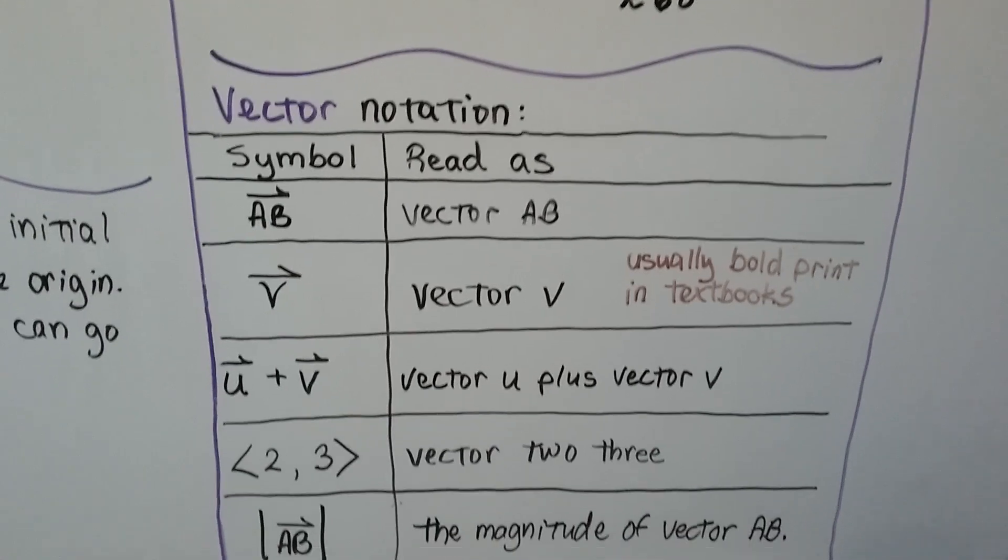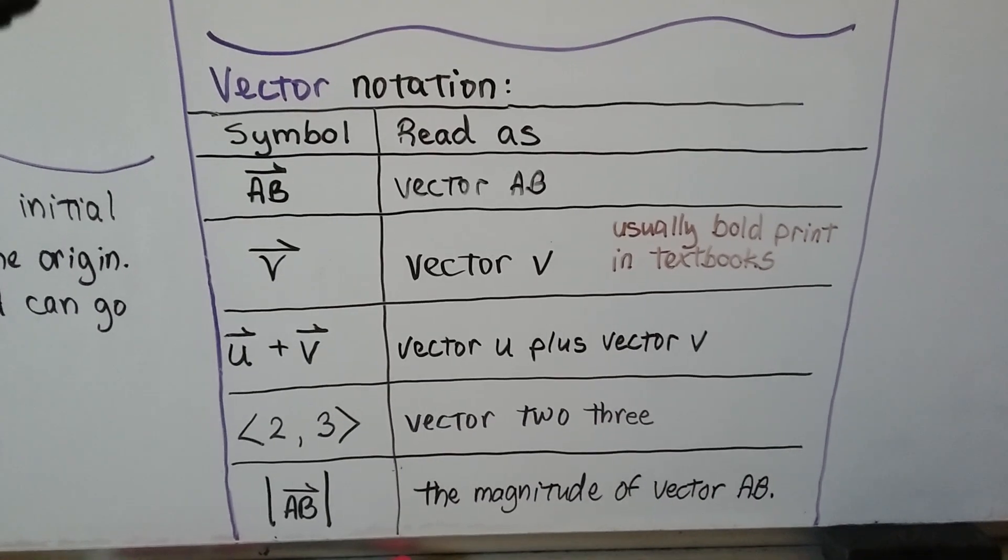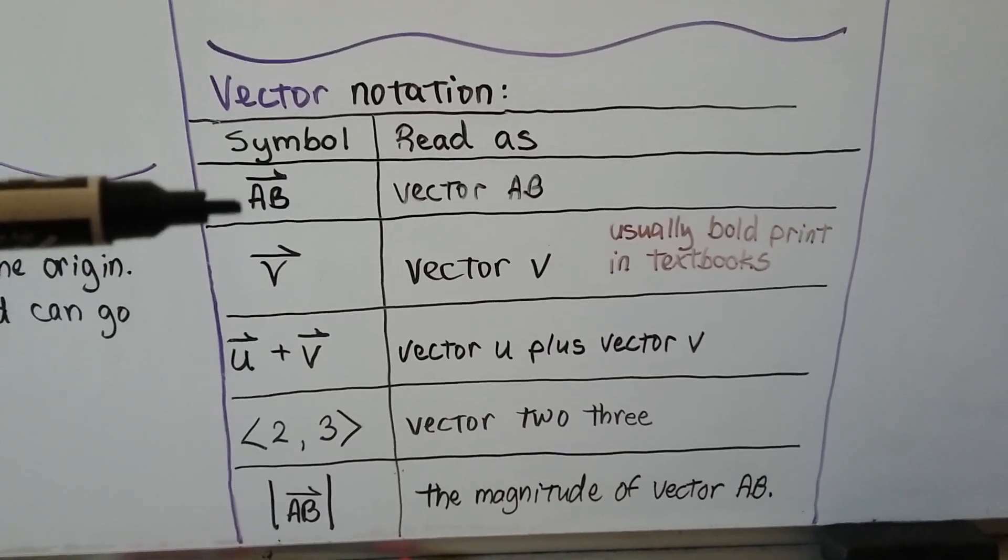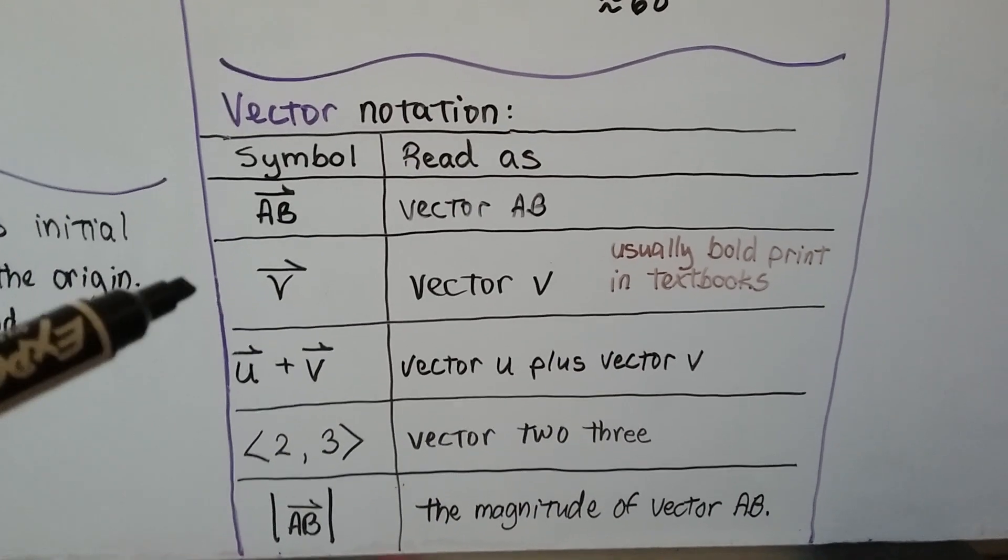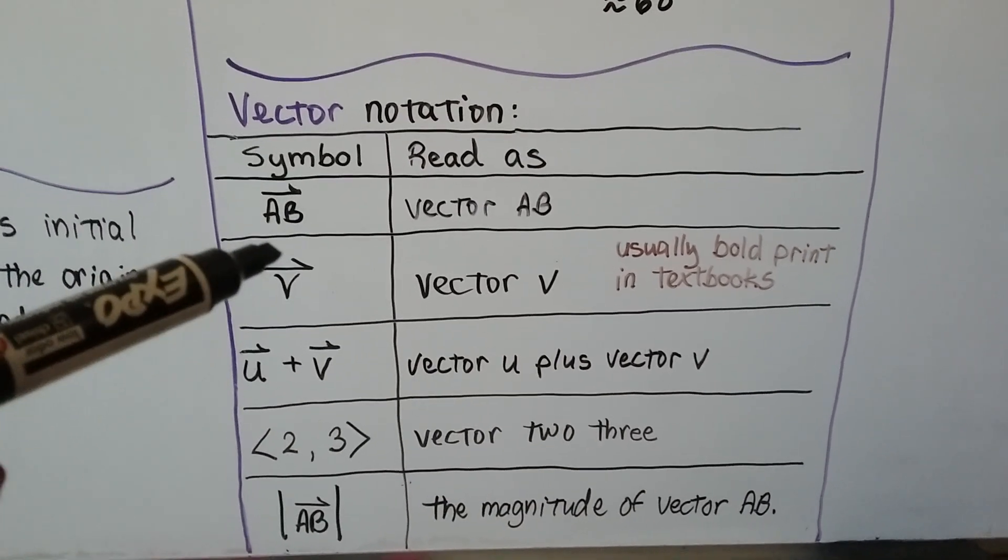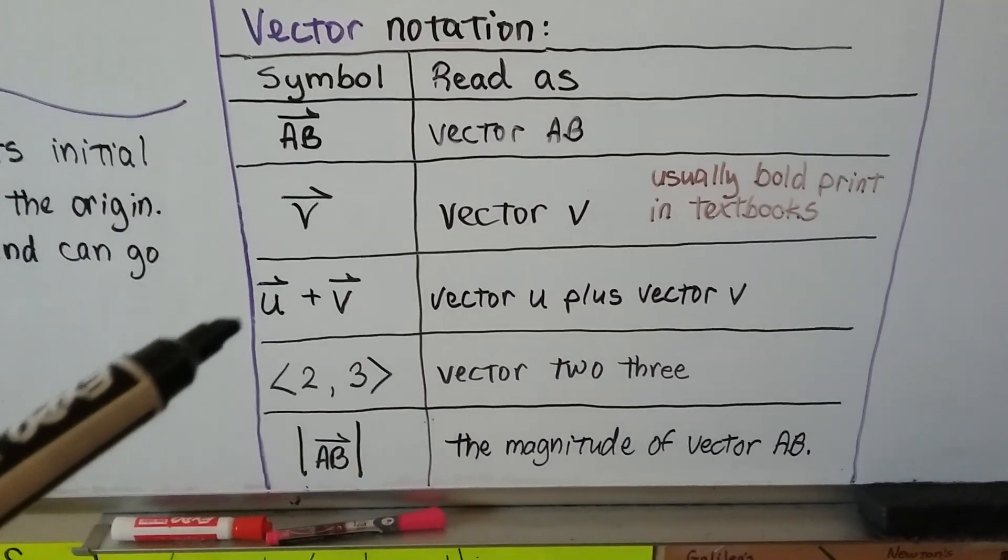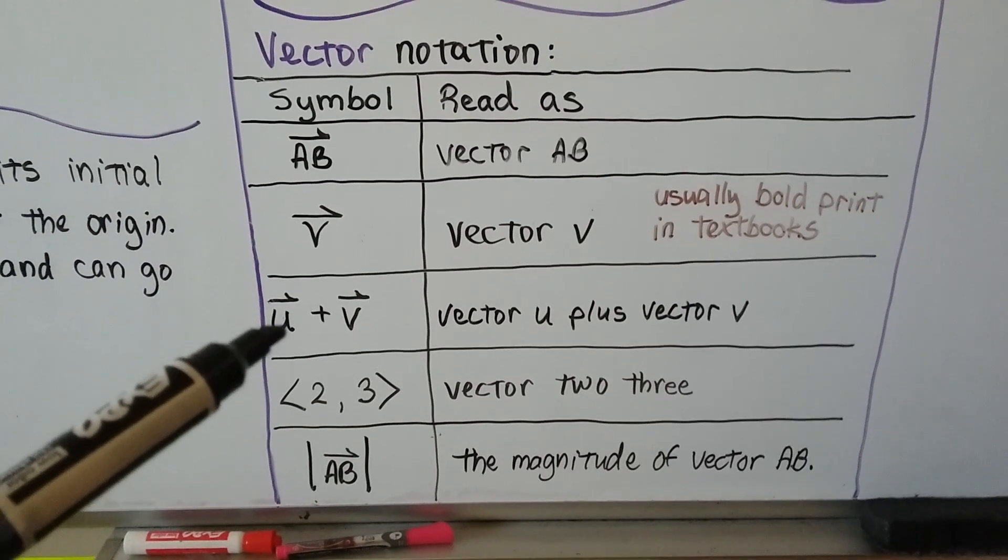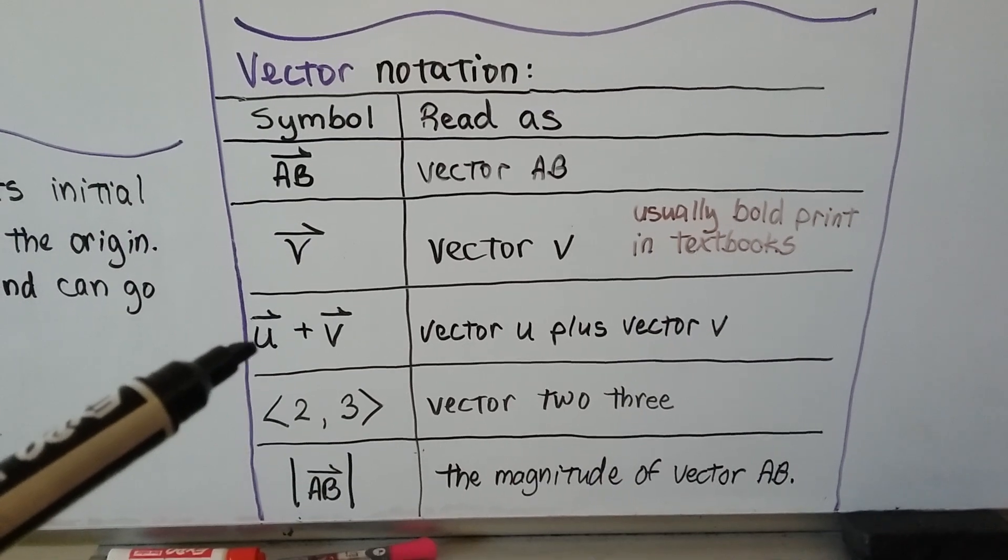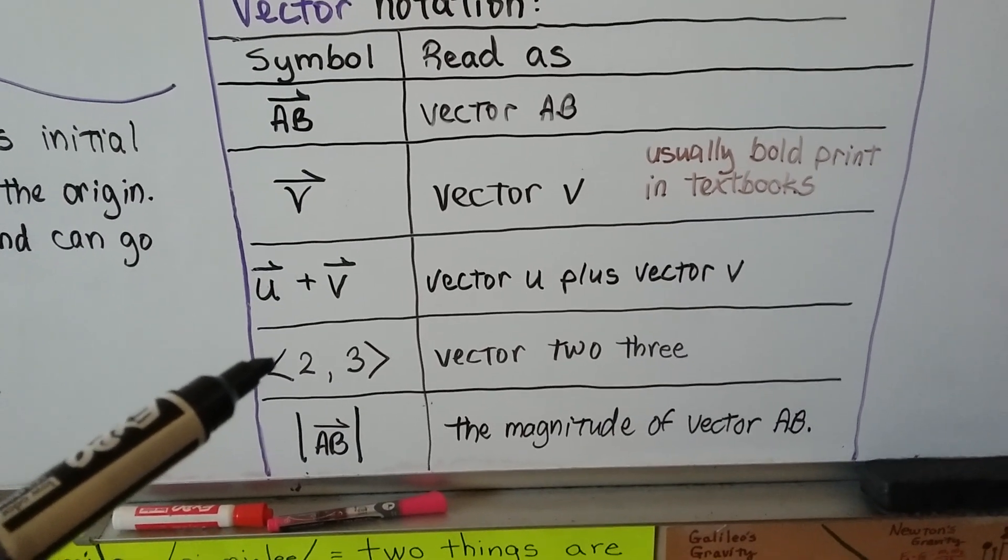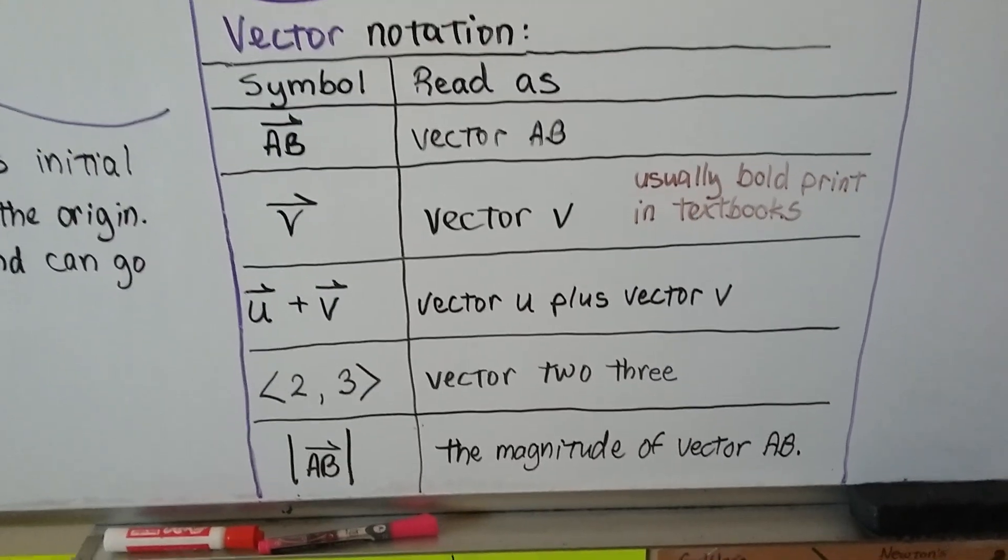Now, here's some vector notation. And I say some because there is more, but we're not going to get into it in this course. And the symbol, if we have an AB with this half arrowhead over the top, we read it as vector AB. When you see a lowercase with this half arrowhead over the top, it's just vector V. And that's usually in bold print in textbooks. If you see something like this, because we're going to talk about vector addition in the next video, this means vector U plus vector V. This is read as vector 2, 3. And this is read as the magnitude of vector AB.